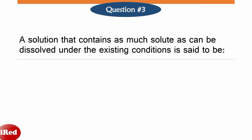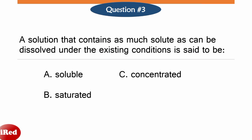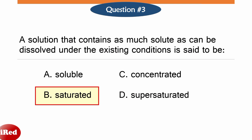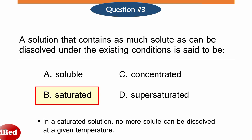Number 3. A solution that contains as much solute as can be dissolved under the existing conditions is said to be: A soluble, B saturated, C concentrated, or D supersaturated. When a solution contains as much solute as can be dissolved under the existing conditions, it is called saturated. In a saturated solution, no more solute can be dissolved at a given temperature.